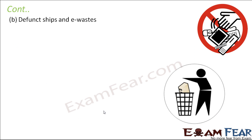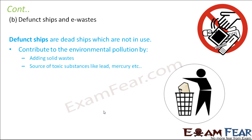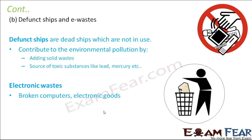Next are defunct ships and e-wastes. Defunct ships are dead ships no longer in use. They contribute to environmental pollution by adding to solid wastes, and they contain metals and toxic substances like lead and mercury which are added to the environment. E-wastes are electronic wastes consisting of broken computers, broken mobile phones, and all sorts of electronic goods. They contribute to toxic metal pollution because most electronic goods contain metals like silicon, iron, and copper.